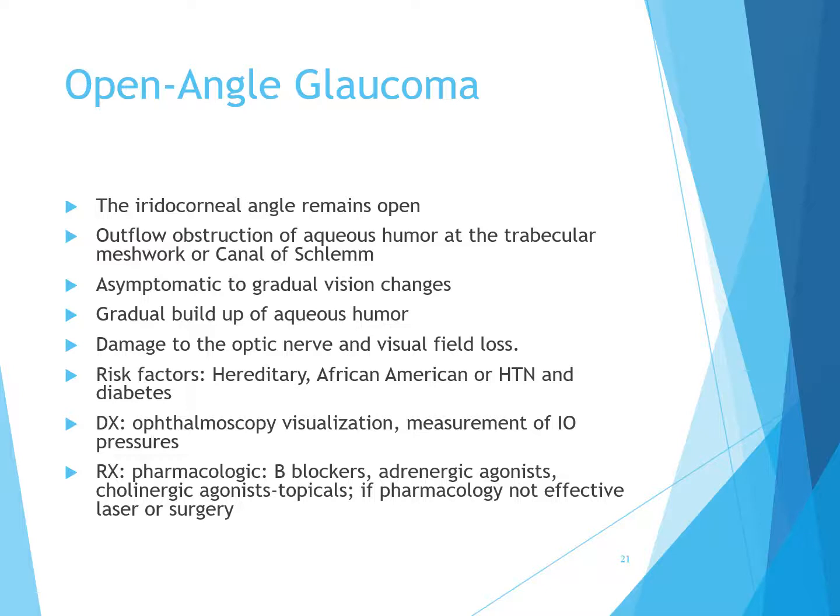Risk factors for open-angle glaucoma include heredity, African-American race, hypertension, and diabetes. It is diagnosed with gonioscopy visualization and measurement of intraocular pressures. Treatment includes pharmacologic options such as beta-blockers, adrenergic agonists, and topical cholinergic agonists. If medications are not effective, laser treatment or surgery may be needed to relieve pressure.